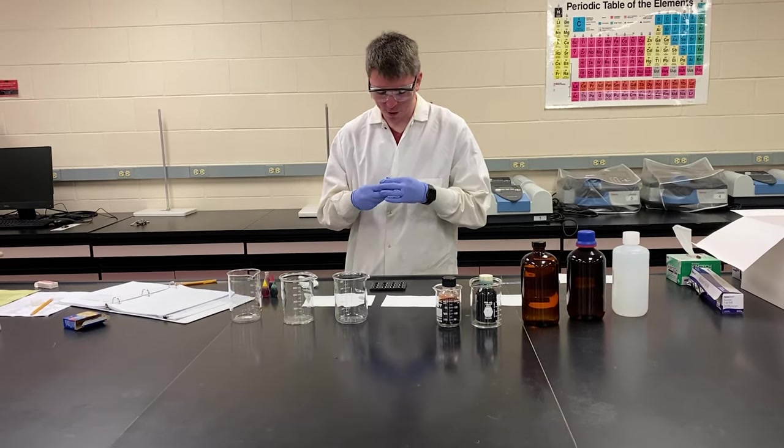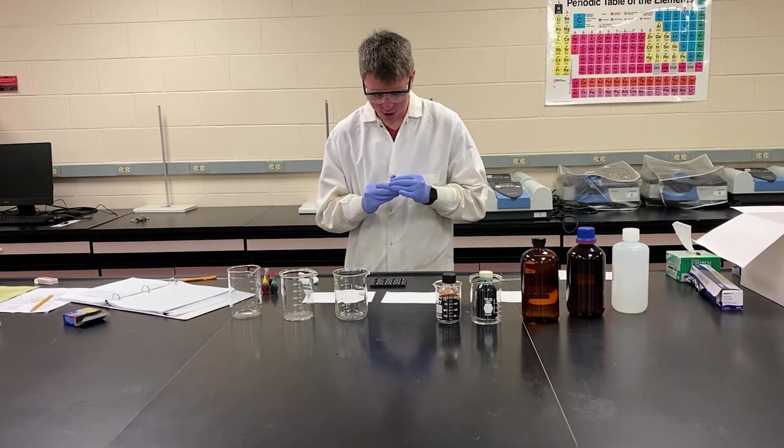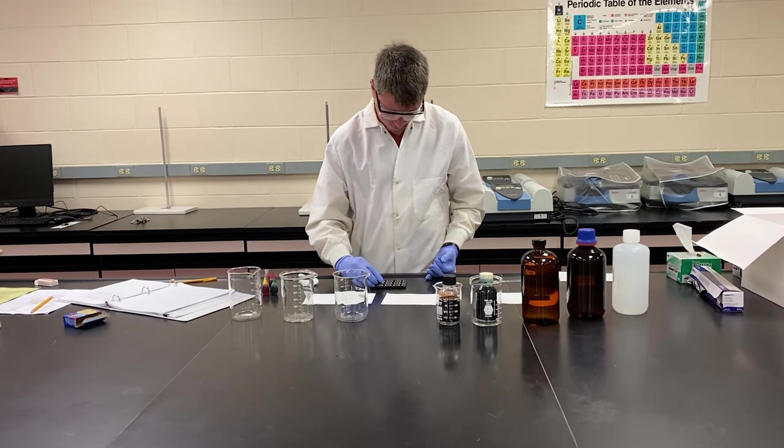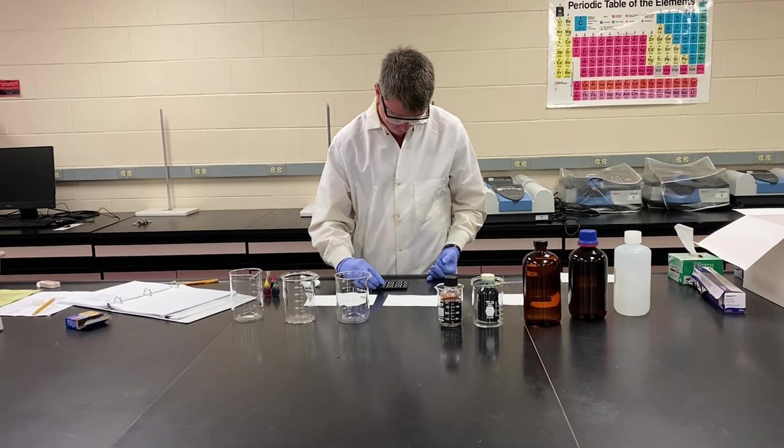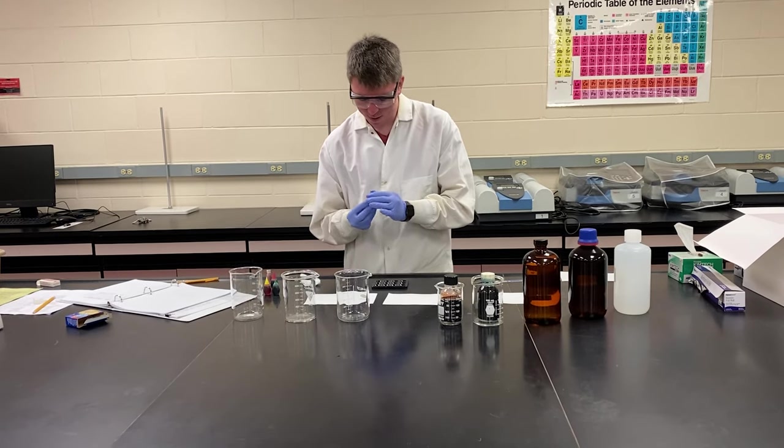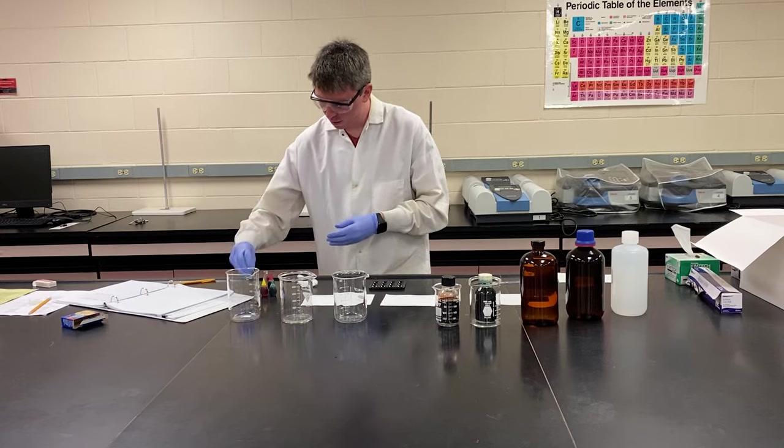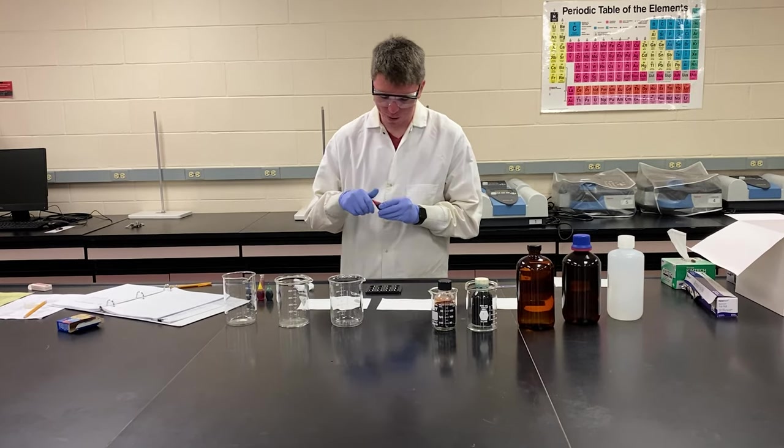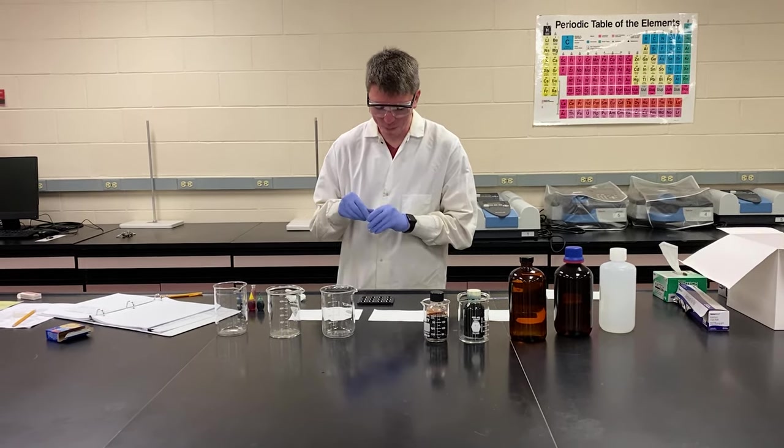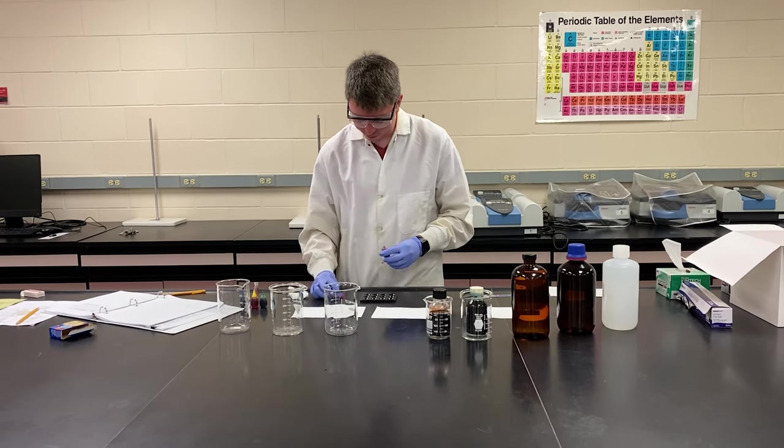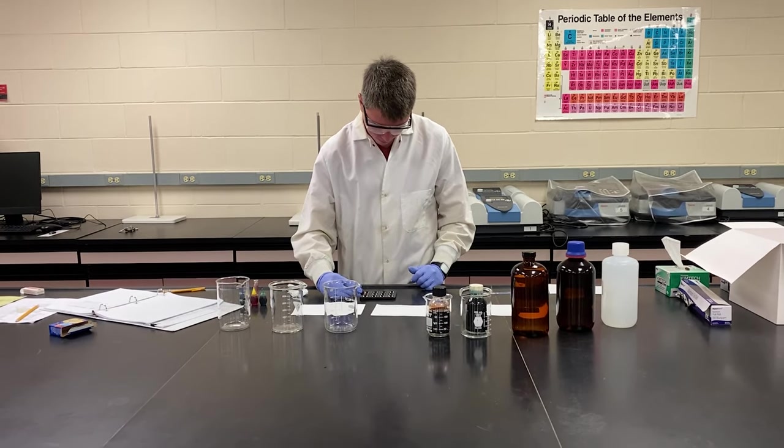To prepare your actual chromatograms, our stationary phase is just going to be these pieces of filter paper. To prepare those, you'll put your baseline, just a line across the bottom. You'll need it about a centimeter and a half, maybe two centimeters above the bottom.